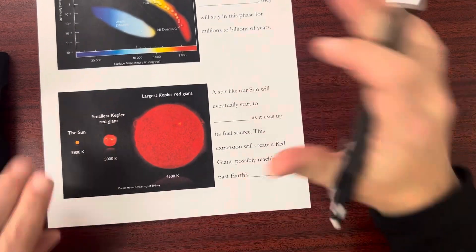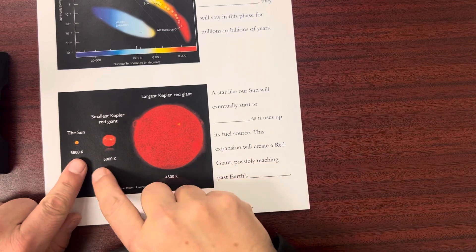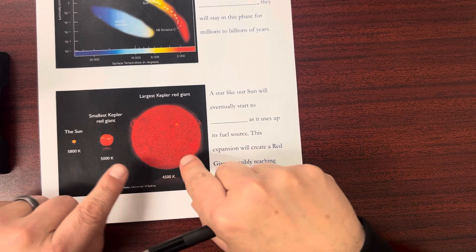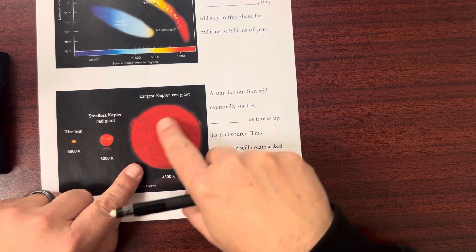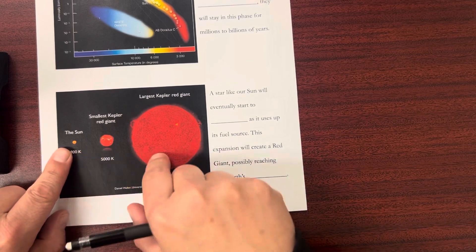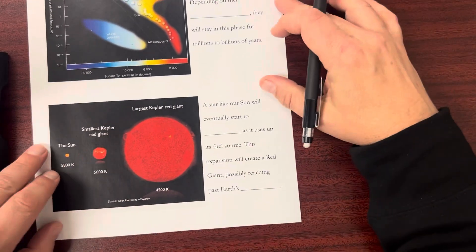Down here you're going to see some size comparisons. We've got our sun, one of the smaller red giants, and then some of the larger red giants. We're going to find out that the sun is going to go through a couple of stages here.